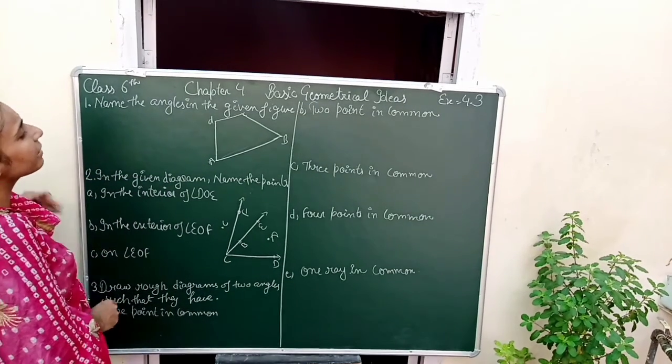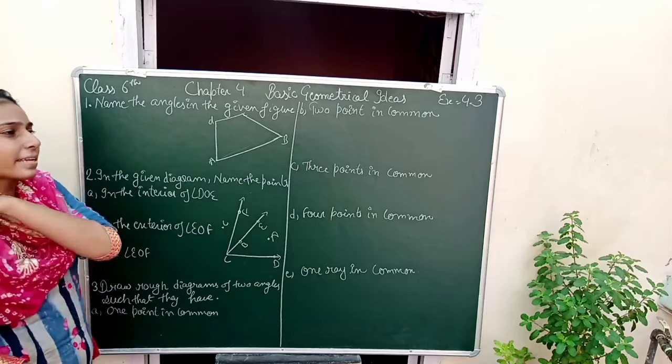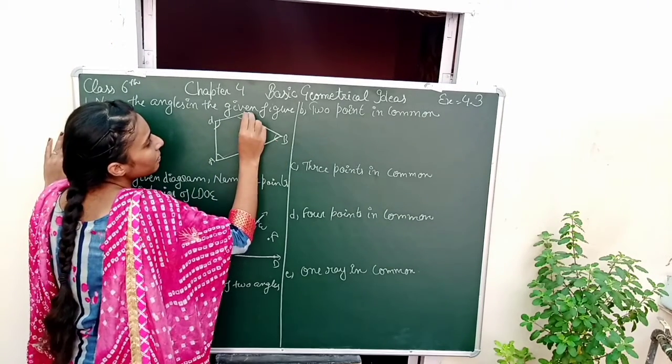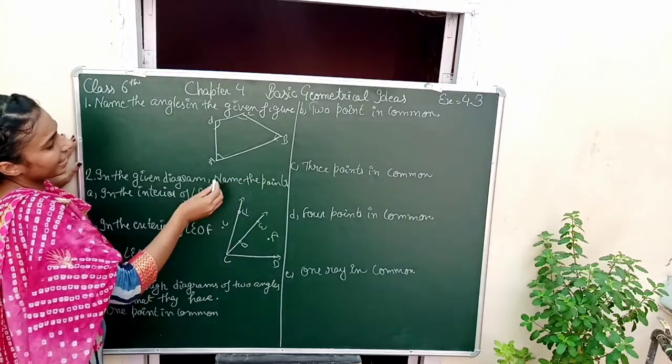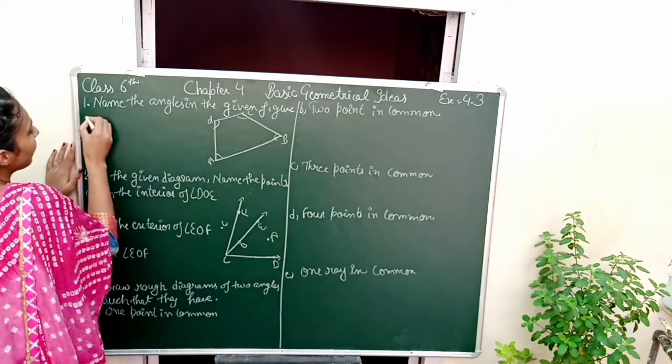Question number 1 is name the angles in the given figure. Here we have a figure and what is the name of the angles. Students, what are the angles? How do we write the names? Let's start here and first we write A, B, C. So this will become angle B.